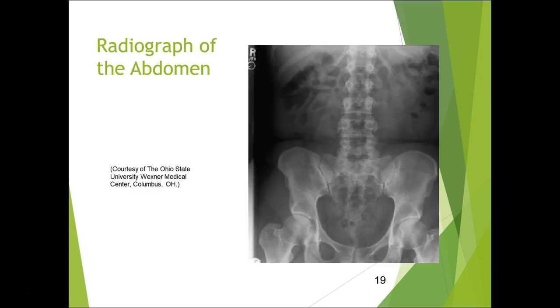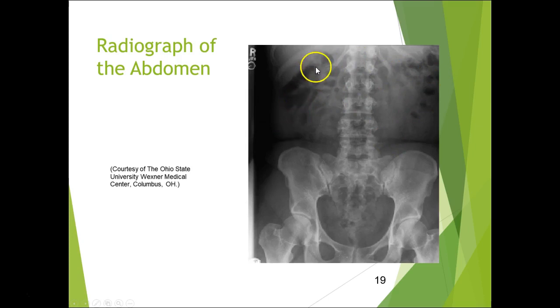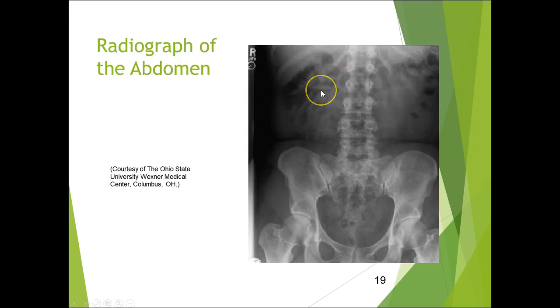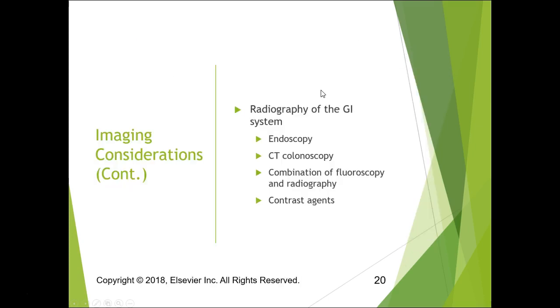This is a KUB showing normal diffuse gas patterns throughout. You can see the large colon, which usually has air within it and fecal matter — totally normal.